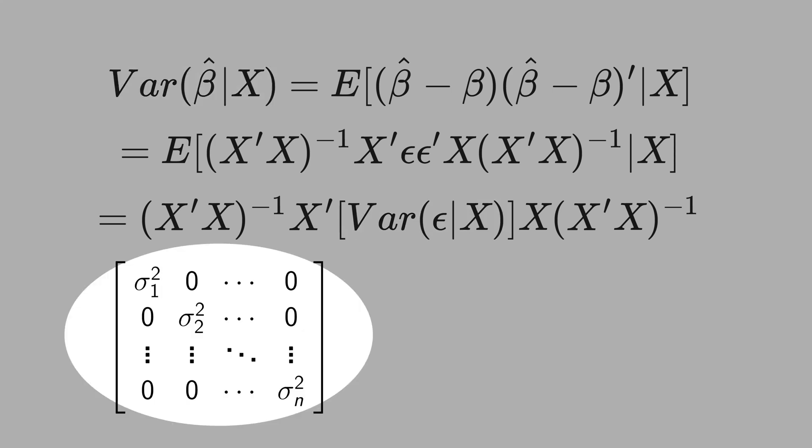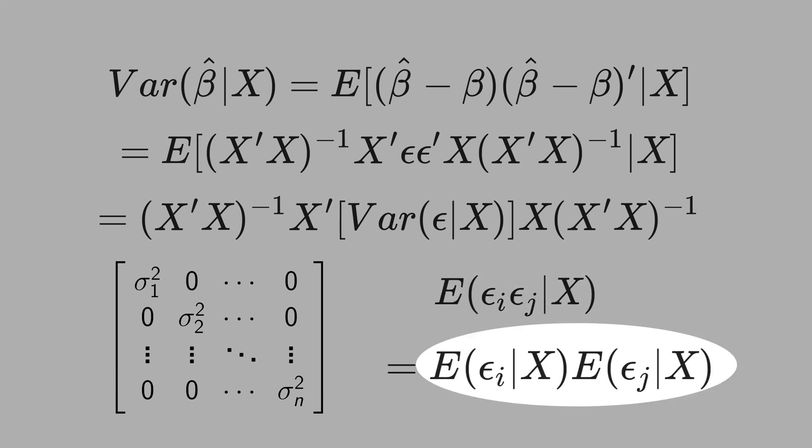Let's see the matrix of the error terms. Note that off-diagonal we have all zeros. Mathematically, we can write the off-diagonal elements in this way. It is just the expected value of the joint distribution of error i and error j. If error i is independent of error j, we can write the joint distribution as the product of the marginal distributions of error i and error j. And this is zero, as we showed in previous videos.